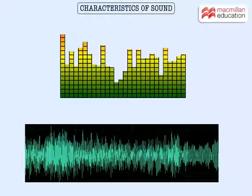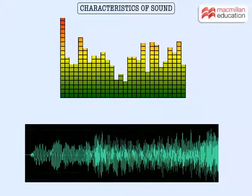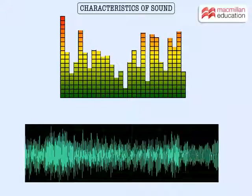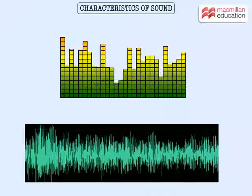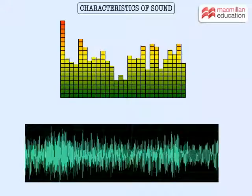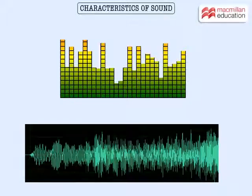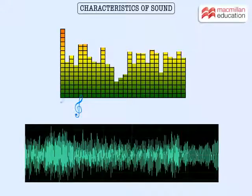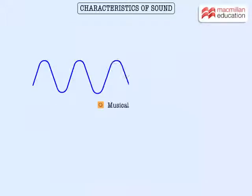We are surrounded by sounds all the time. We can often identify a sound just by hearing and not really seeing the source. That is because sounds have certain characteristics. Before we understand the characteristics of sound, let's discuss the basics. All sounds are produced by vibrating bodies, be it music or noise.